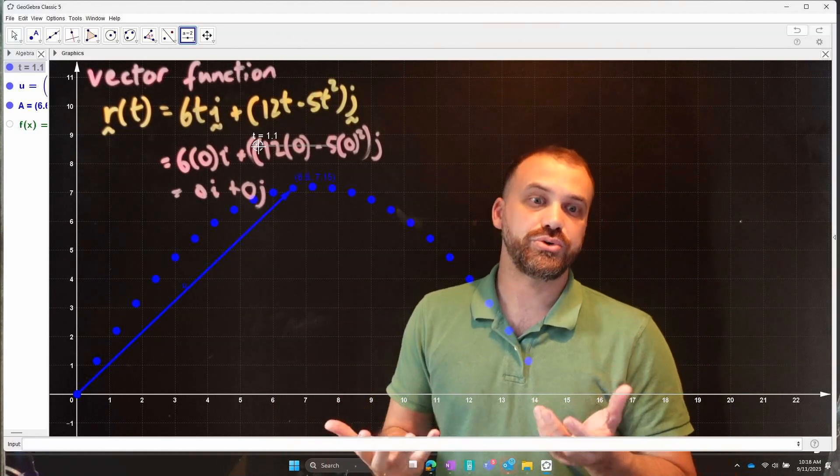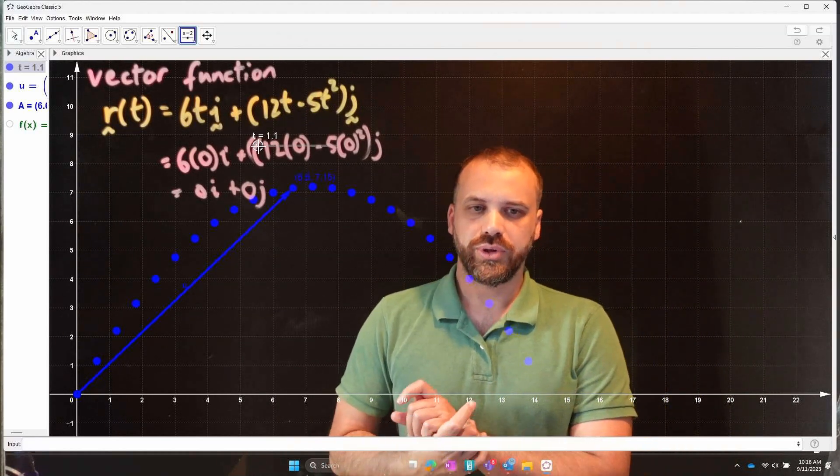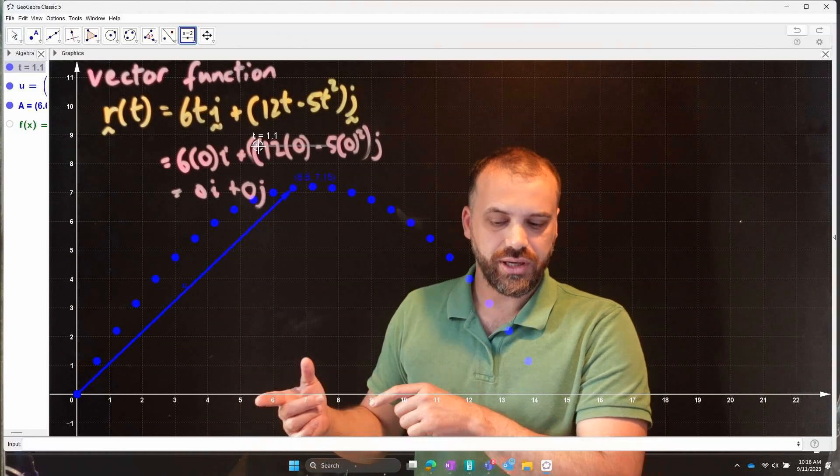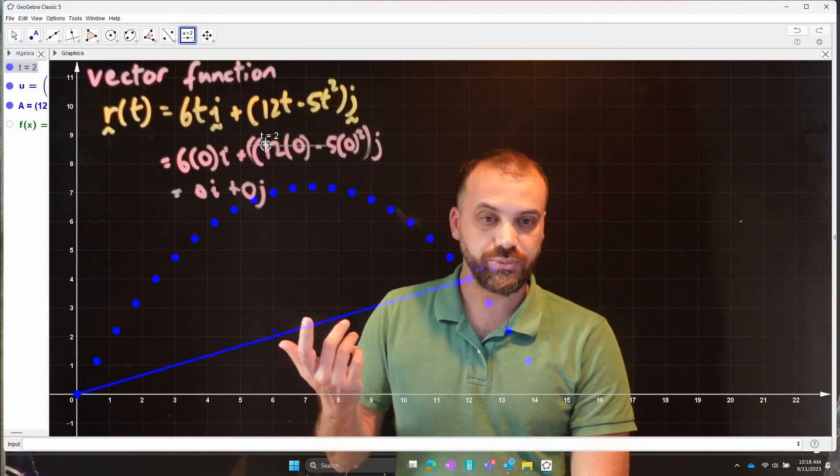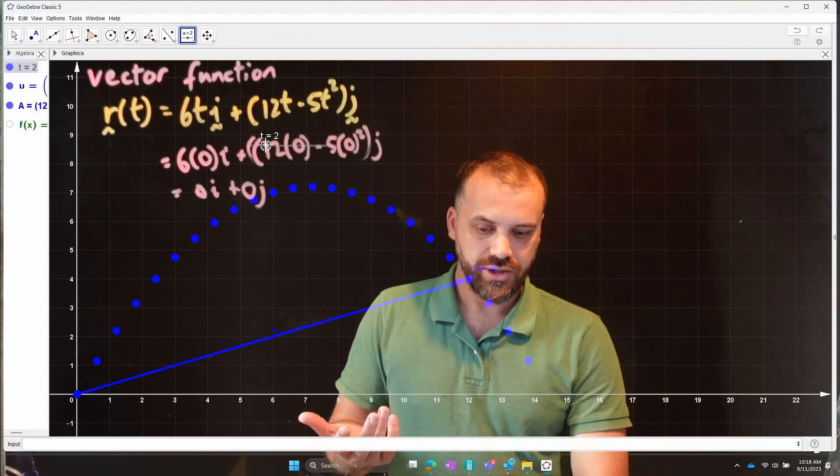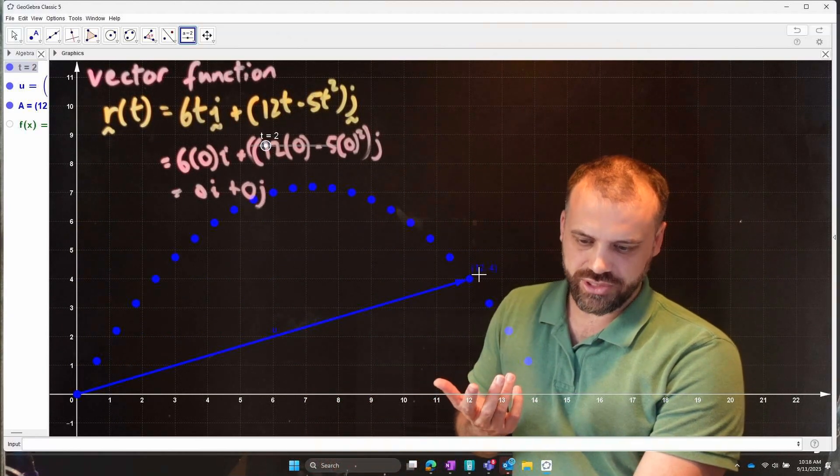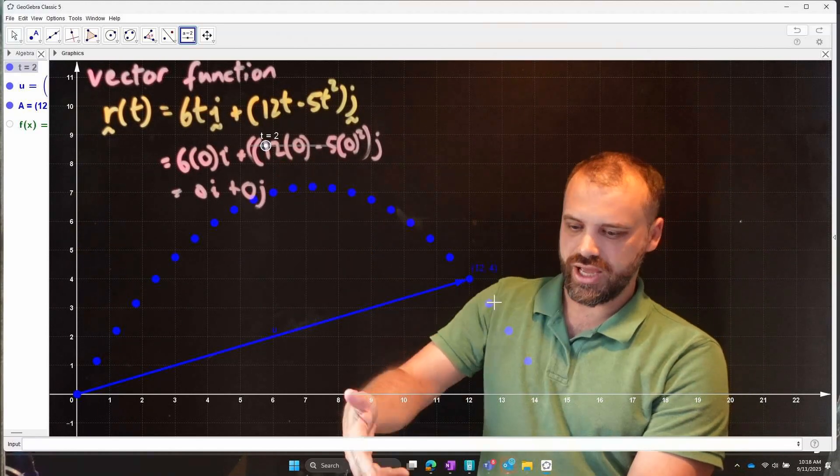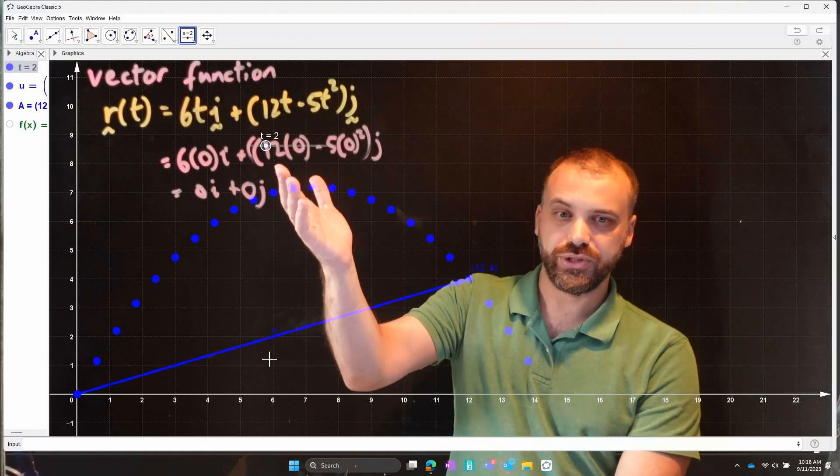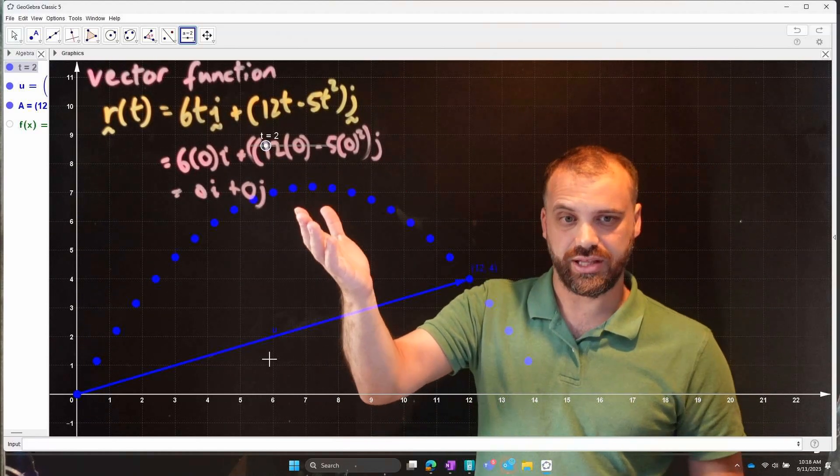Now, what if we wanted to know something? What if we wanted to know, well, where is the ball after, I don't know, two seconds? Where is the ball after two seconds? Well, we can see here the ball is 12 across and four up. But, you know, what if we didn't have this fancy software?